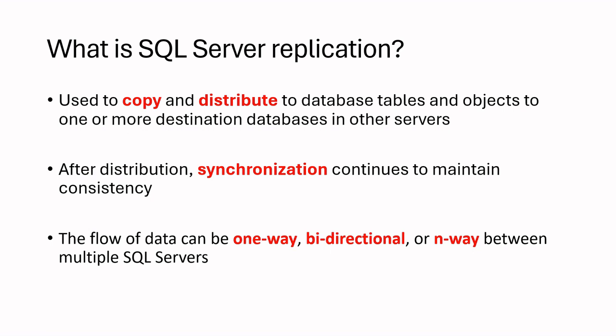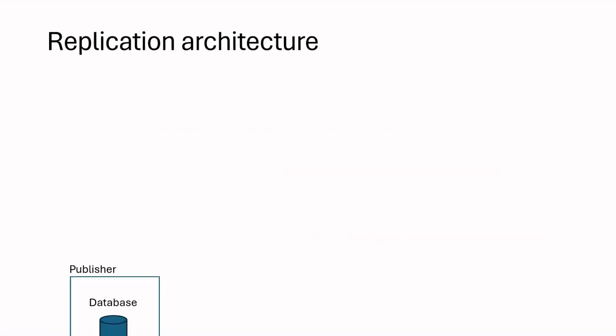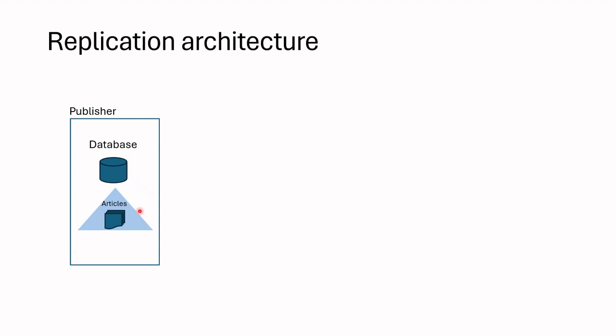The first components in the replication are publisher and articles. Publisher is a server where the source database is maintained. Each database in the publisher may contain articles which include tables, views, indexed views, stored procedures, user-defined functions, and other objects.